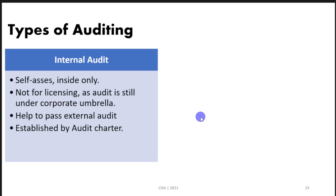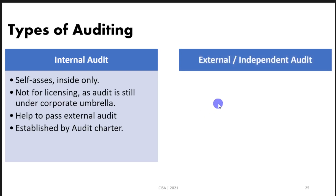As we discussed earlier in regard to the SOX Act, SOX compliance requires organizations that are publicly listed or related to the SEC in the United States to have an independent audit after 90 days from publishing the report. So the internal audit will not suffice here, but the external independent audit will.